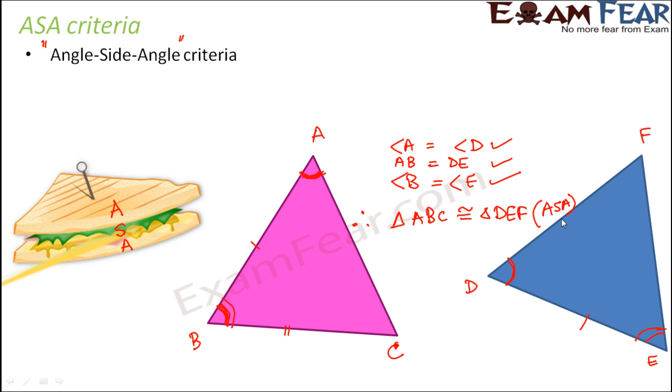So if this is true then we can say that triangle ABC is congruent to triangle DEF and this happens by ASA criteria. So in this way we can say that the two triangles are congruent.